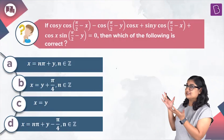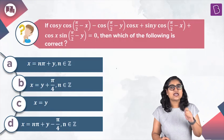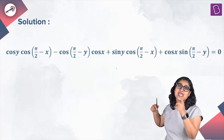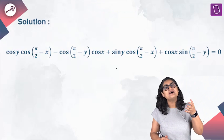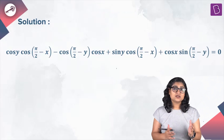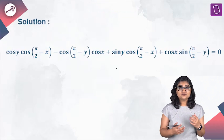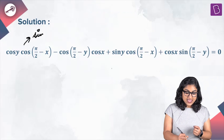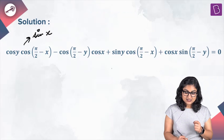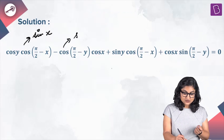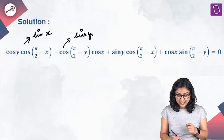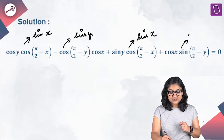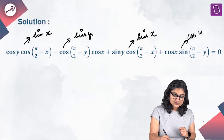In this question, we are given a complex trigonometric equation and must find x in terms of y. We simplify the left-hand side using complement identities: cos(π/2 − x) = sin(x), cos(π/2 − y) = sin(y), and the third cosine term also converts to its corresponding sine or cosine form.